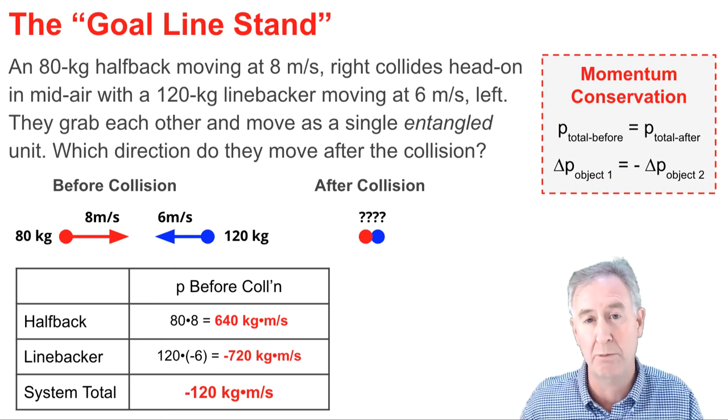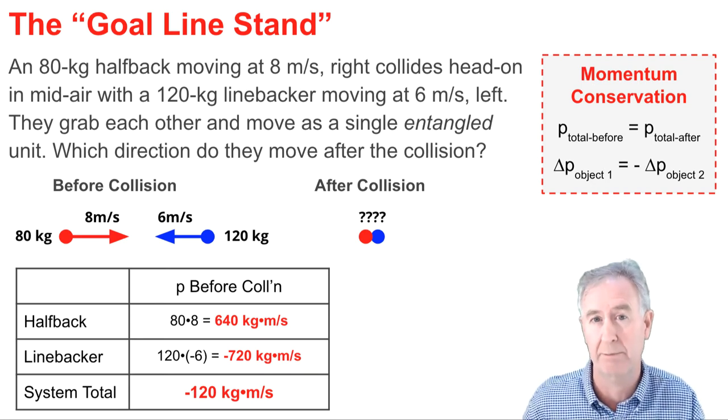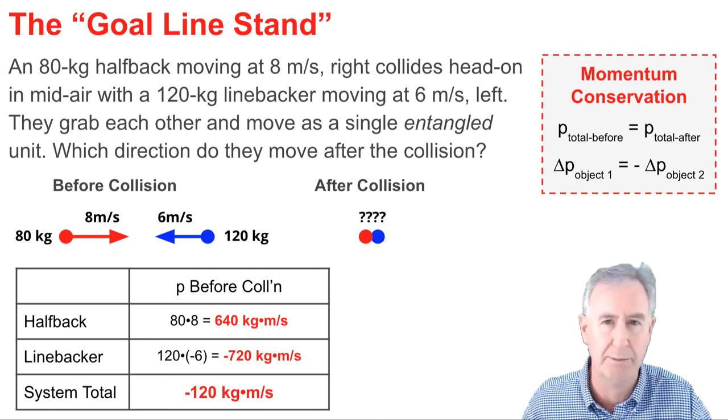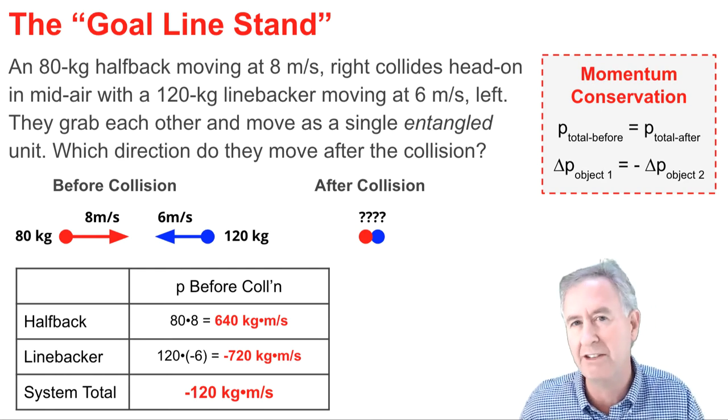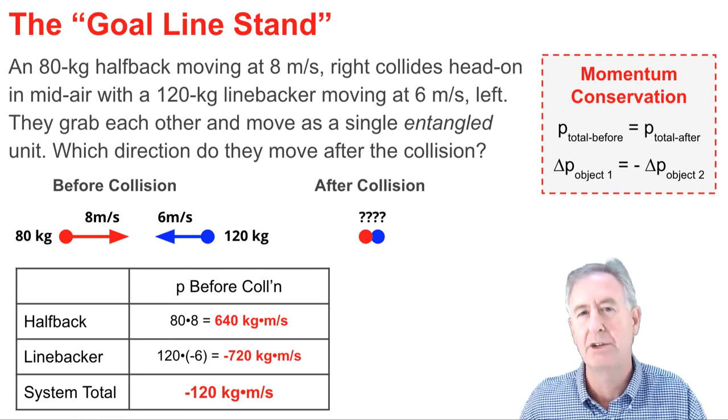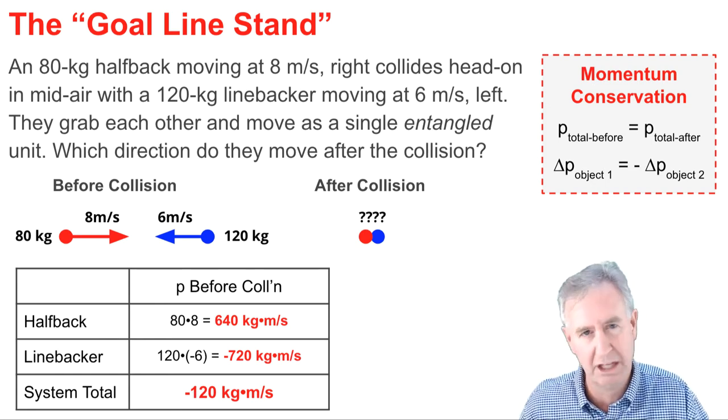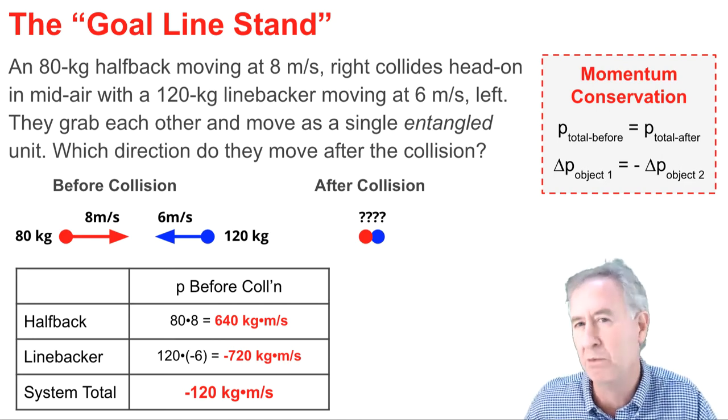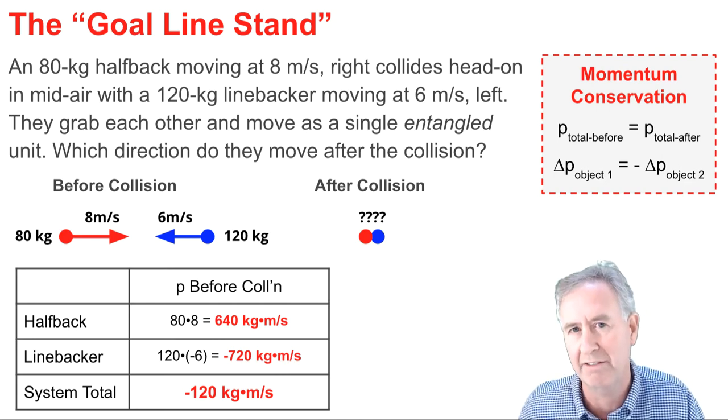But for the linebacker, the momentum is 120 kilograms times the 6 meters per second left, which I'm calling negative, to give us negative 720 units of momentum to the left. The total momentum of the system, these two players combined, is negative 120 units. The negative indicates left.